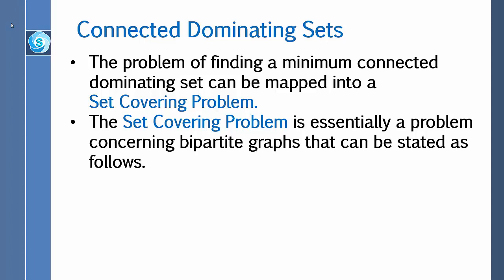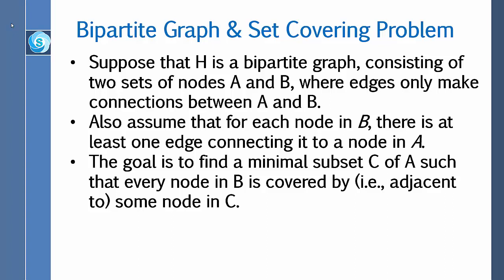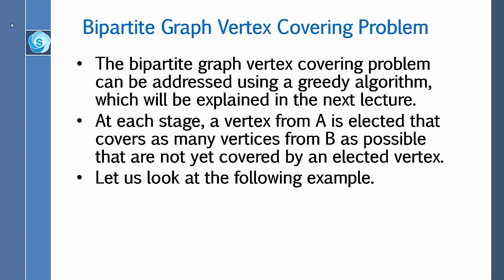The problem of finding a minimum connected dominating set can be mapped into a set covering problem. The set covering problem concerns bipartite graphs and can be stated as follows: suppose H is a bipartite graph with two sets of nodes A and B, where edges only connect A to B. Assume each node in B has at least one edge to a node in A. The goal is to find a minimal subset C of A such that every node in B is adjacent to some node in C. This can be addressed using a greedy algorithm: at each stage, a vertex from A is selected that covers as many uncovered vertices from B as possible.